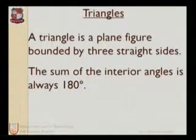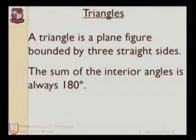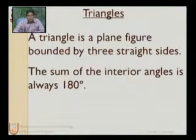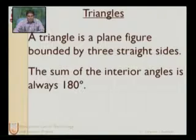With three lines we can form a triangle. A triangle is a plane figure bounded by three straight lines — it is the most basic polygon. The sum of the interior angles of a triangle is always 180 degrees, meaning all angles of any triangle together sum to 180 degrees.